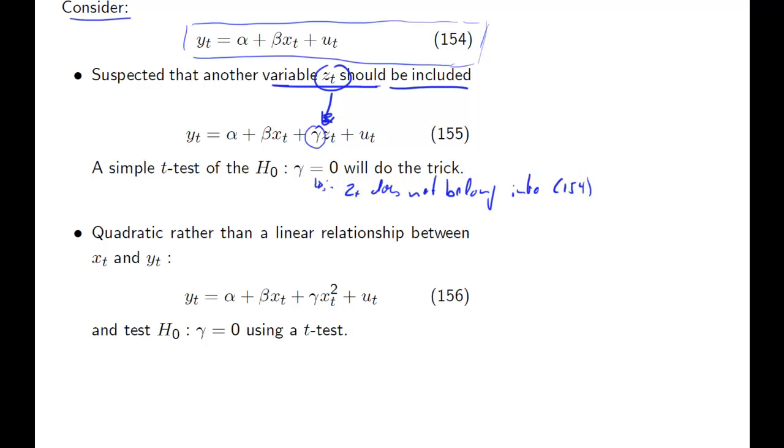Also, if you have a particular non-linear relationship in mind, remember equation 154 is a linear relationship, but if you think that x_t should enter as a quadratic variable into your regression model, then you add that quadratic term, you add x_t squared, and again you're testing the hypothesis that this coefficient relating to the quadratic term is equal to 0, and if you cannot reject that hypothesis, x_t squared doesn't belong and you can revert to 154. So this is all pretty straightforward.